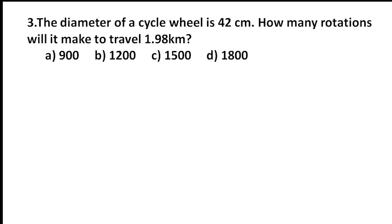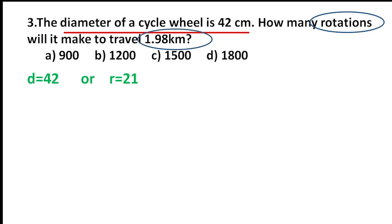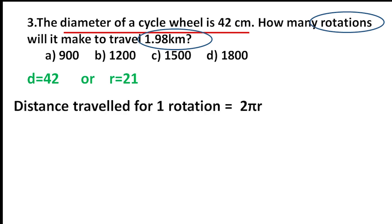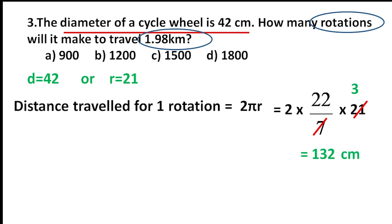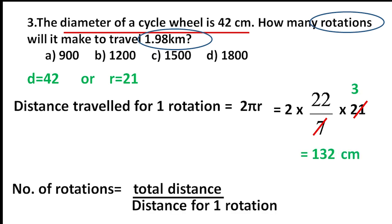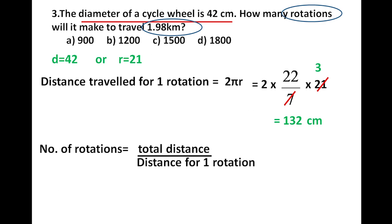Moving to the third question. The diameter of a cycle wheel is 42 cm. How many rotations will it make to travel 1.98 km? Diameter = 42 cm, so r = 21 cm. The distance travelled in one rotation is the circumference: 2πr = 2 × (22/7) × 21 = 132 cm. Number of rotations = total distance ÷ distance for one rotation. Total distance is 1.98 km, and our circumference is in cm.